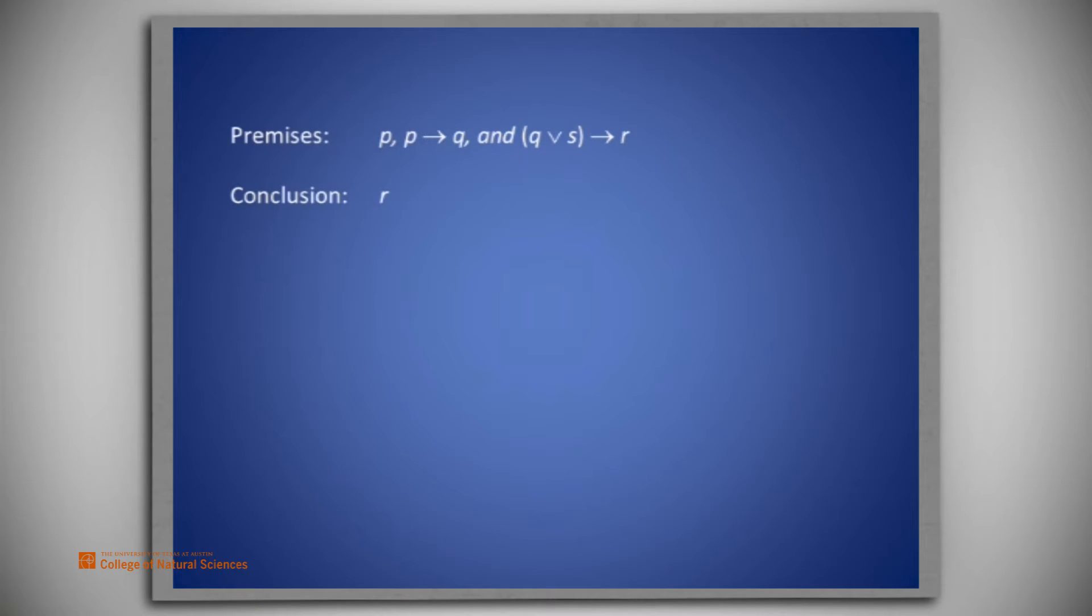Let's think a bit about how we would obtain R from those premises. And the thinking we're going to do goes backwards, even though the proof to be presented will go forwards. Look at the premises and see that we could get the conclusion R were we to know Q or S. We can obtain Q from the second premise were we to know P, and we actually have P because it's the first premise.